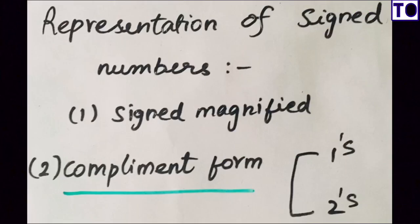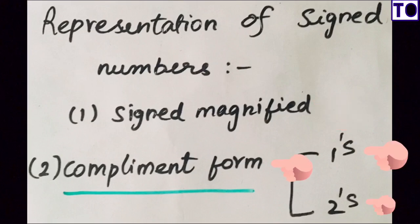First, we have a photo display that is a representation of signed numbers. That is Signed Magnitude Form and Complement Form. There are two types in Complement Form: One's Complement and Two's Complement.